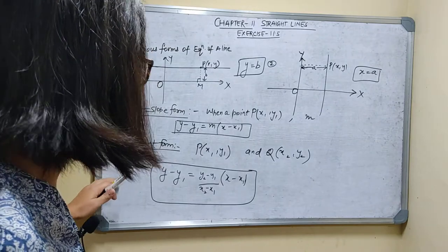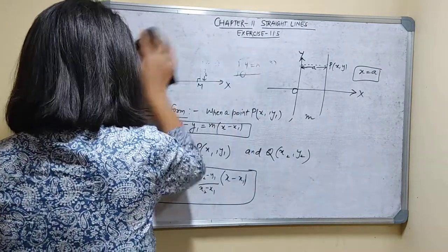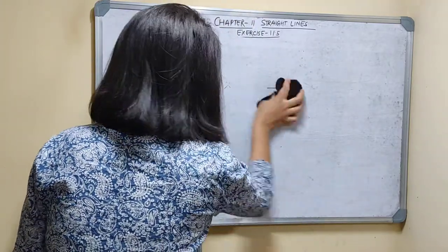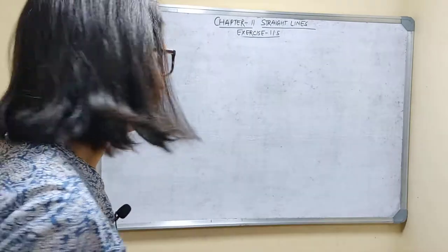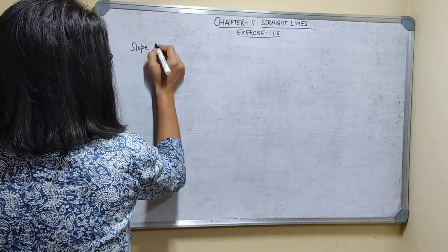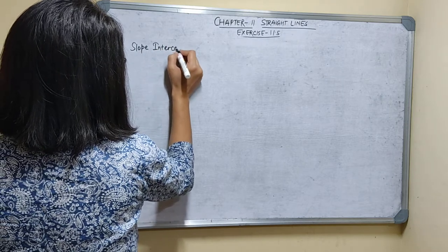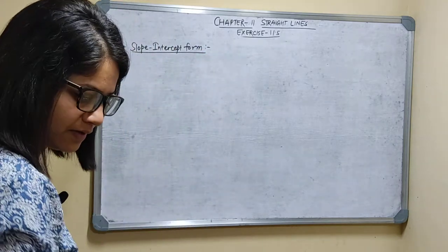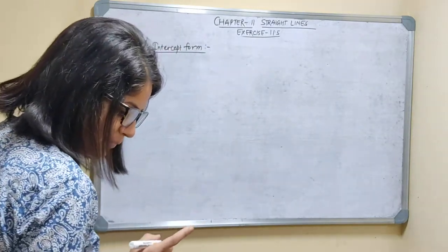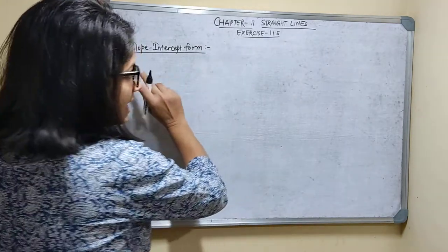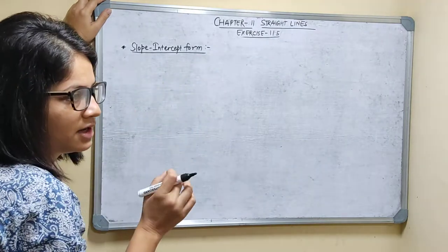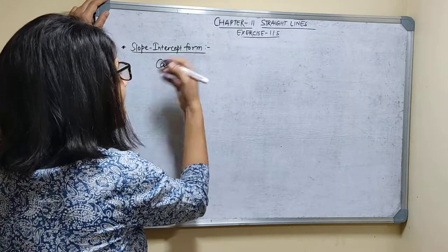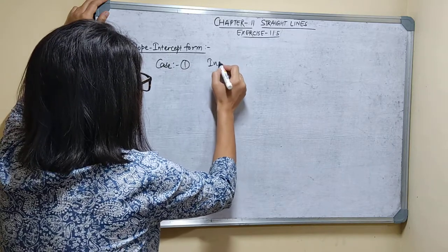Now: Slope Intercept Form. To find the equation of a straight line with slope m and one intercept on an axis. When slope is given and intercept on the y-axis is given — this is Case 1: slope is given and intercept on y-axis.